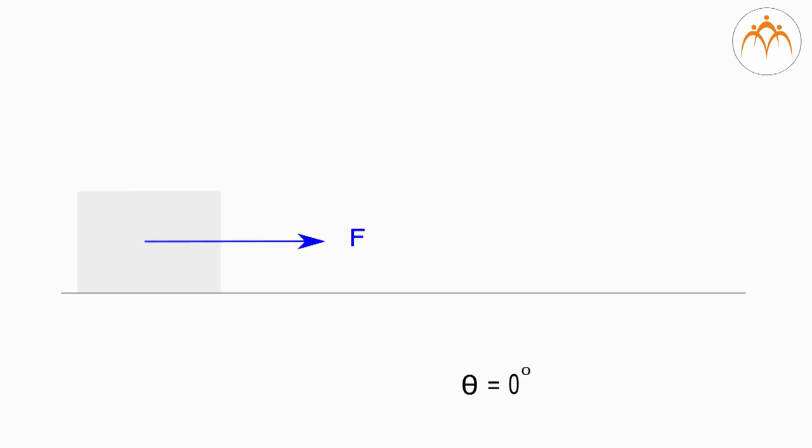Cosine is greatest when the angle is zero. The angle between two vectors pointing in the same direction is zero. Zero at 90 degrees. Forces perpendicular to displacement do no work.